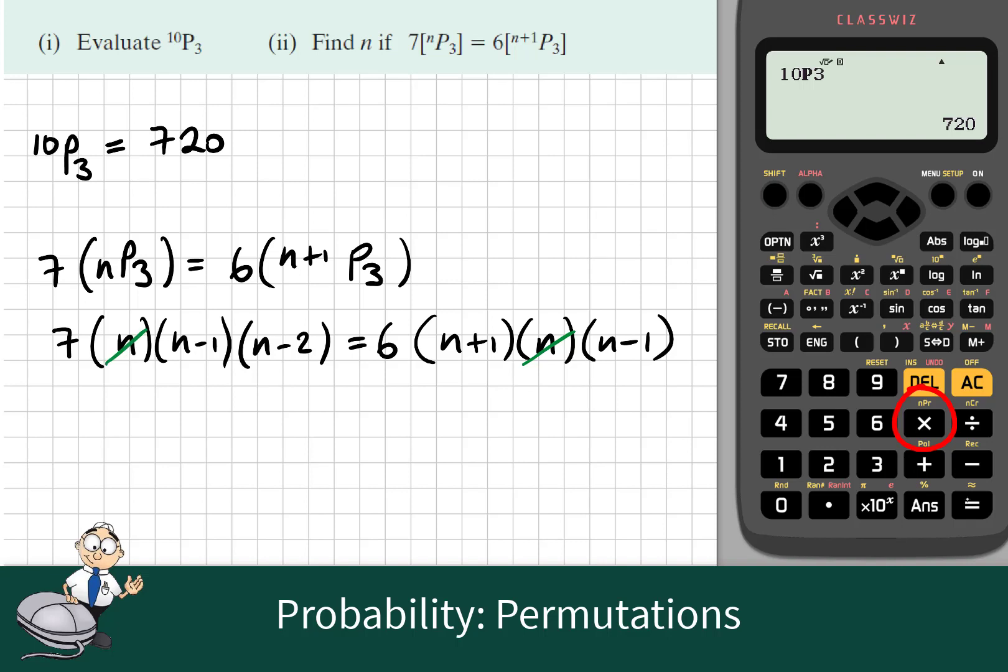So we'll solve this equation. We'll divide both sides by n and both sides by (n-1). Now we expand what's left. 7 times (n-2) is 7n-14 and 6 times (n+1) is 6n+6.